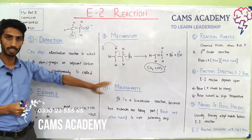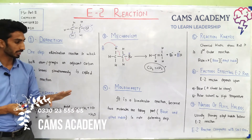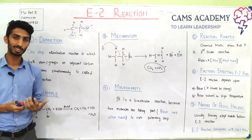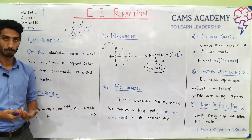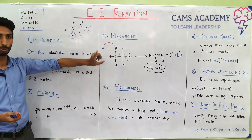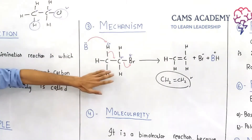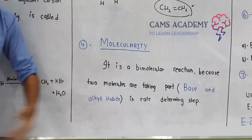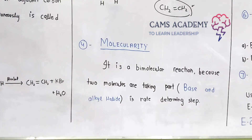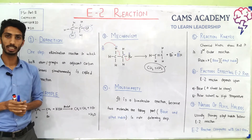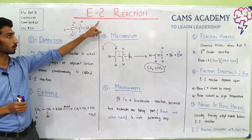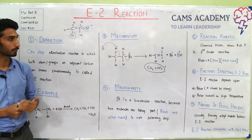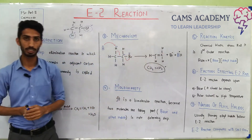Now if we talk about molecularity, we need to understand how many molecules are involved in the rate-determining step. Since E2 is a one-step reaction, that single step is the rate-determining step. Two molecules are involved: one base molecule and one alkyl halide molecule. Because two molecules participate, the molecularity is two — that is why we call it E2.